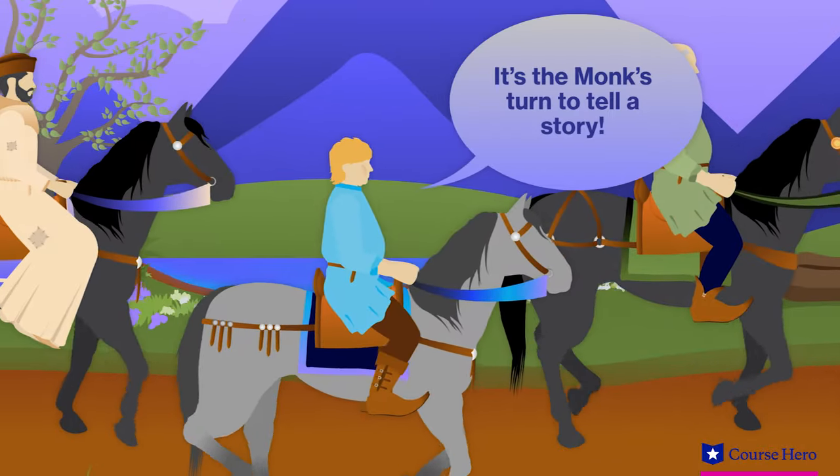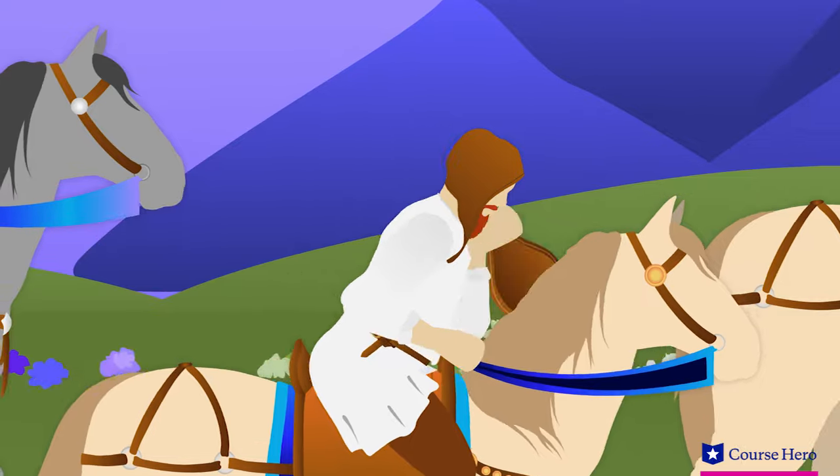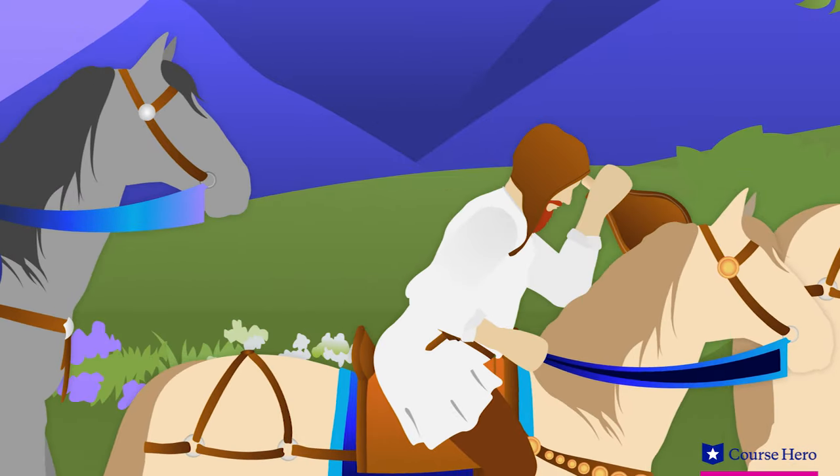Harry Bailey says it is the monk's turn to tell the story. The miller, who is drunk, says he has a story to tell about a carpenter and his wife. Chaucer warns this tale may not be to the liking of those who prefer morality, good breeding, or saintliness.